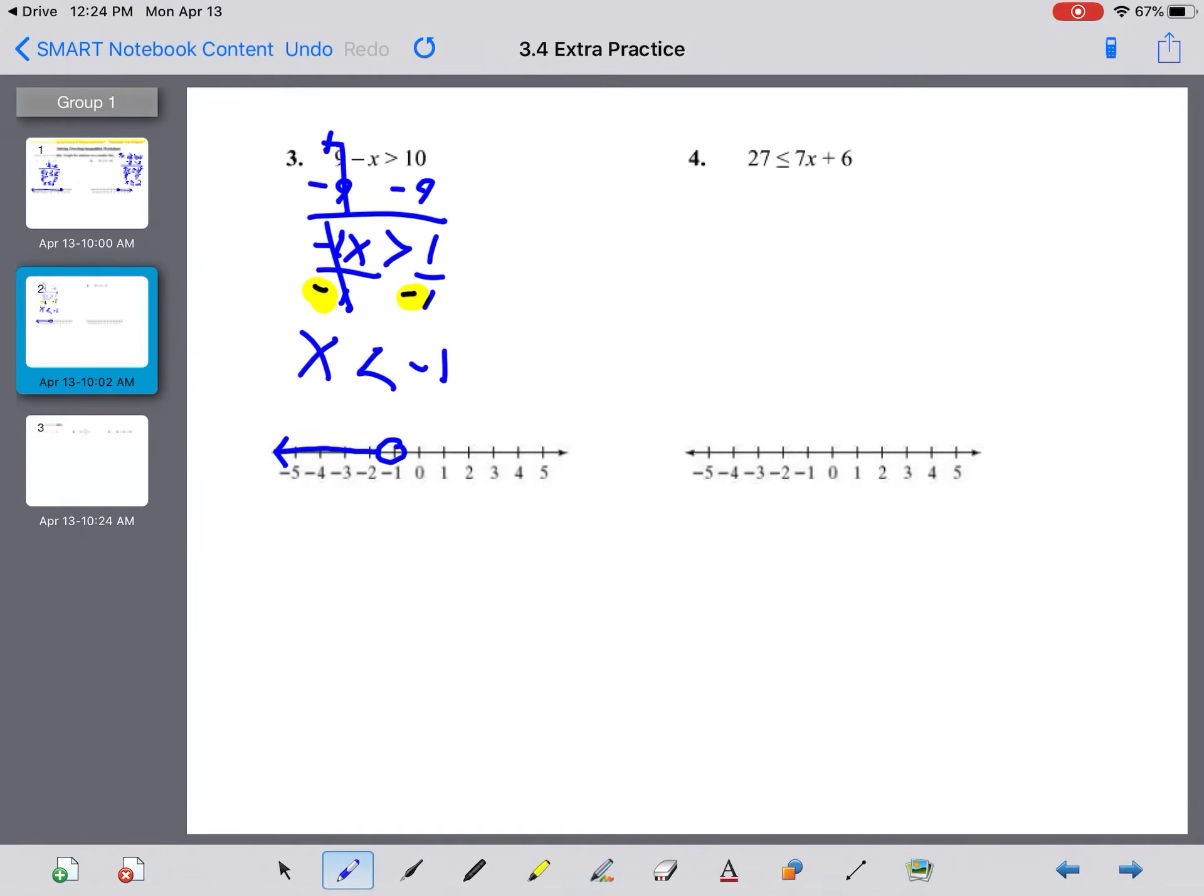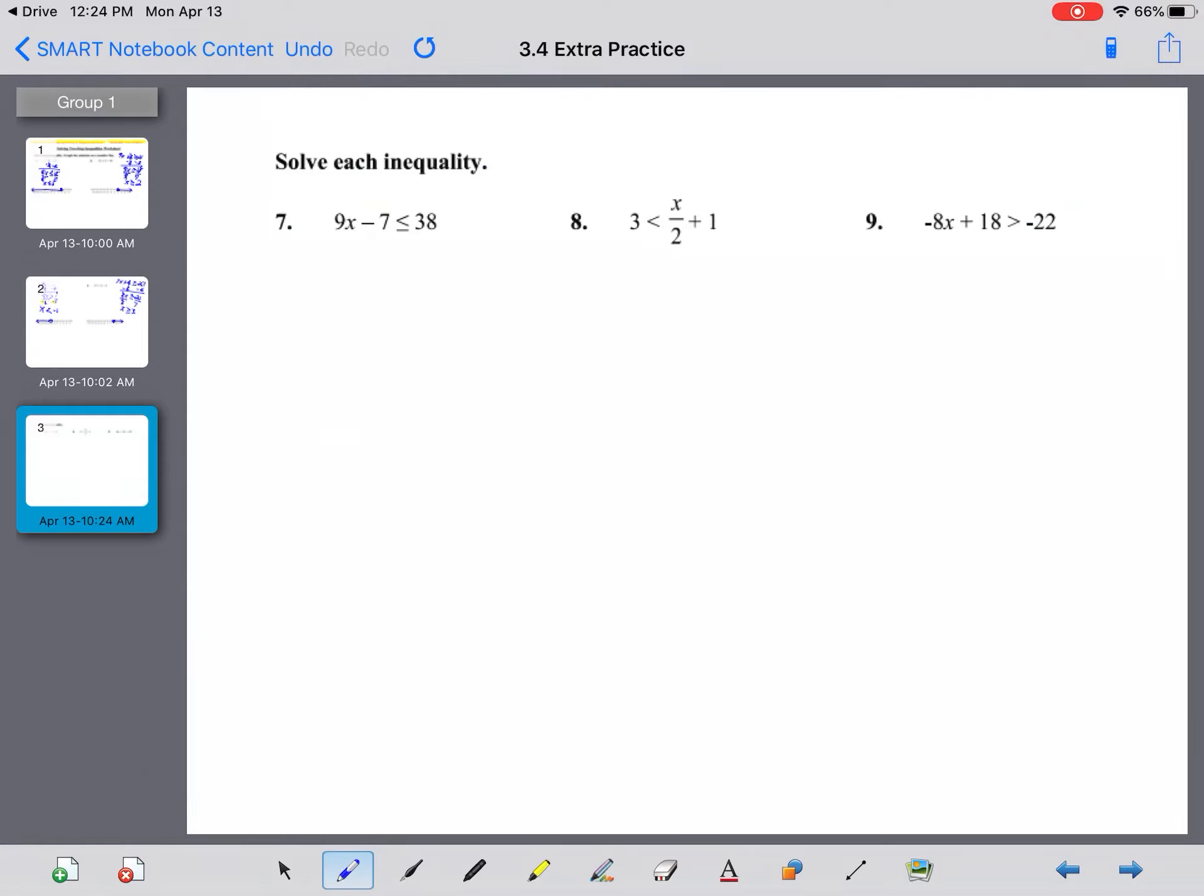Next one, you have 27 is less than or equal to 7x + 6. Again, if you like to rewrite it with the x on the left-hand side, that's okay: 7x + 6 is greater than or equal to 27. You're going to minus 6 on both sides. 7x is greater than or equal to 21, and divide both sides by 7. Sevens cancel; x is greater than or equal to 3. Put a closed dot on 3; greater than, or the values to the right.